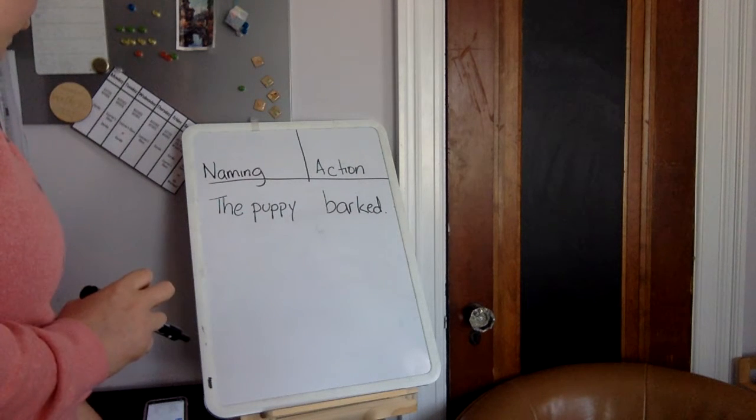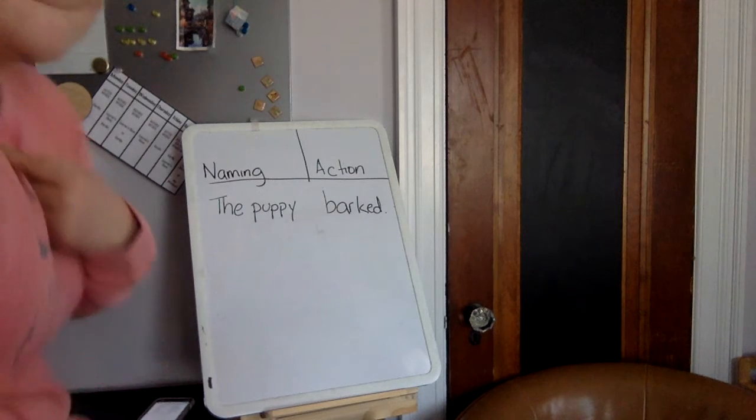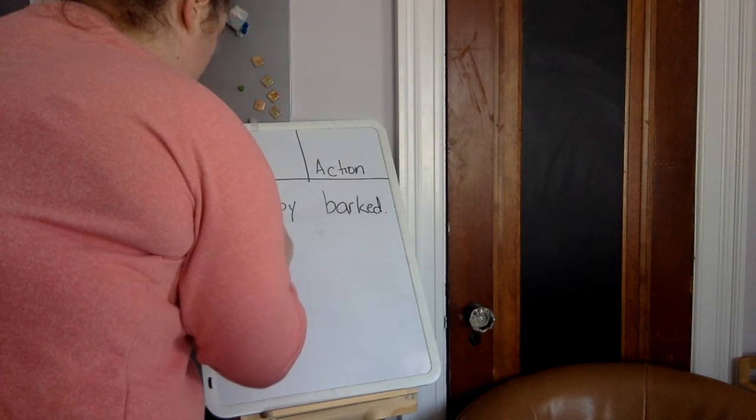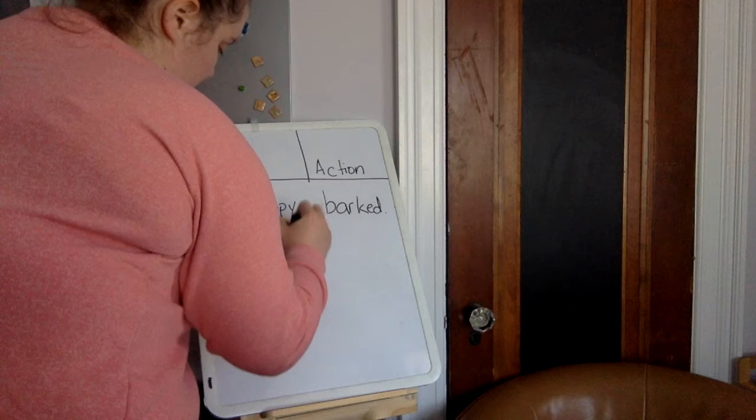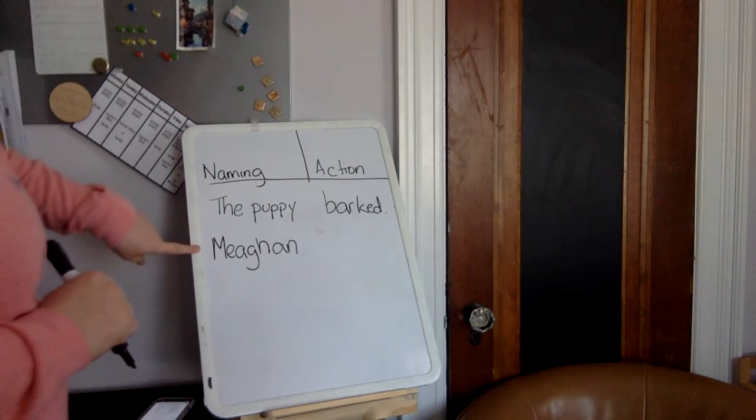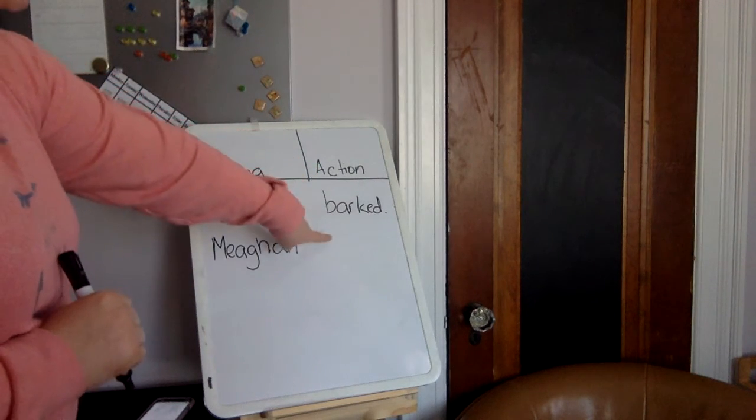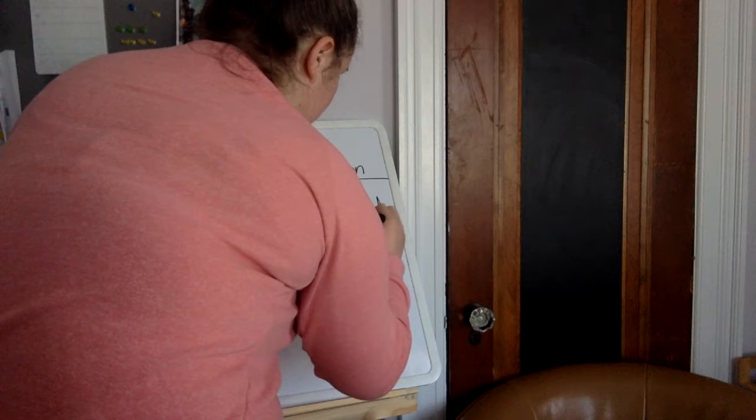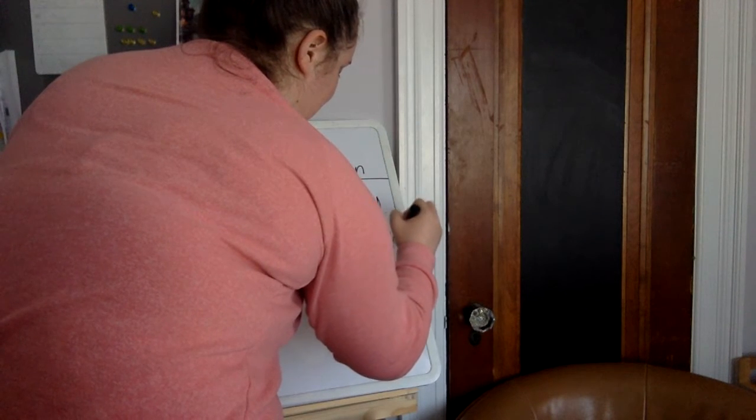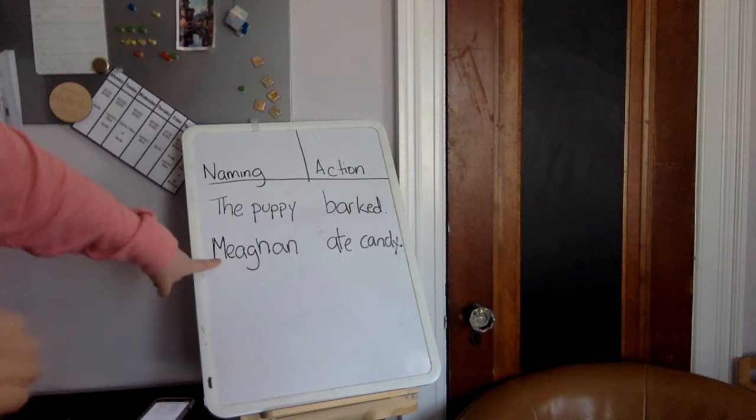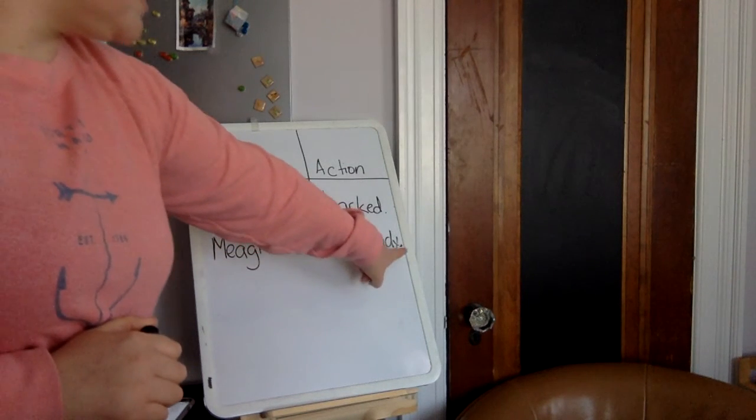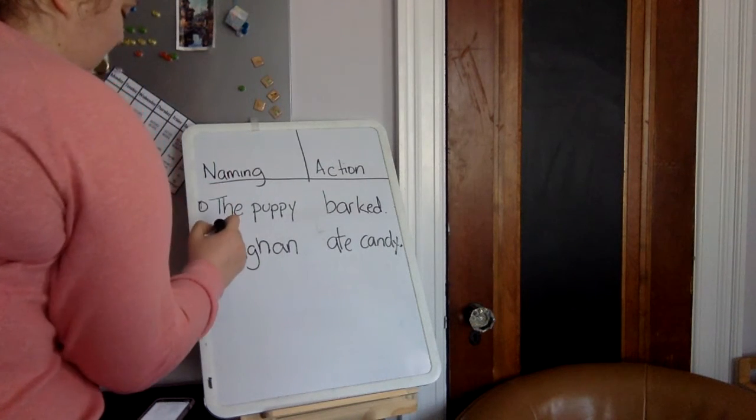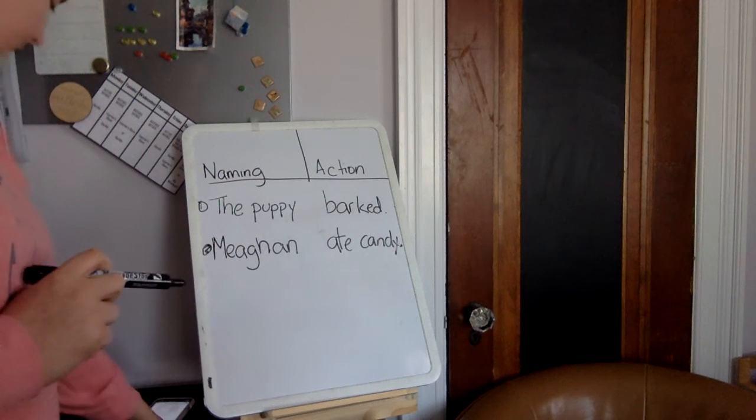We have what's my name? Megan. Megan. That's the naming. My name is Megan. Now we need an action. Ate. Megan. Look, Megan ate candy. Period at the end. That's our sentence. We have one, two sentences. All right, let's write a few more.